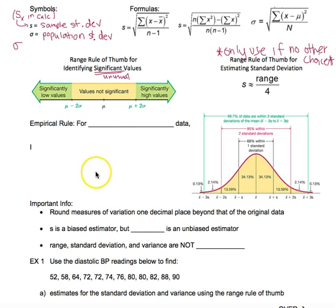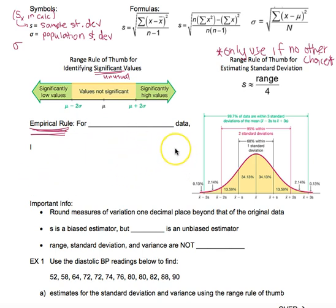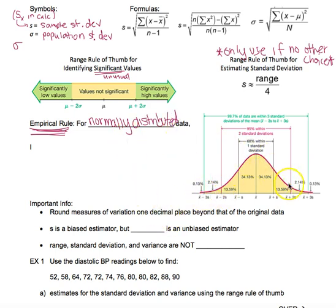The empirical rule is very important — it always pops up on the midterm and on the final. It will say 'using the empirical rule' and then give you a question. The empirical rule applies to normally distributed data, which is data that is approximately bell-shaped — meaning it goes low, high, low and is approximately symmetrical.